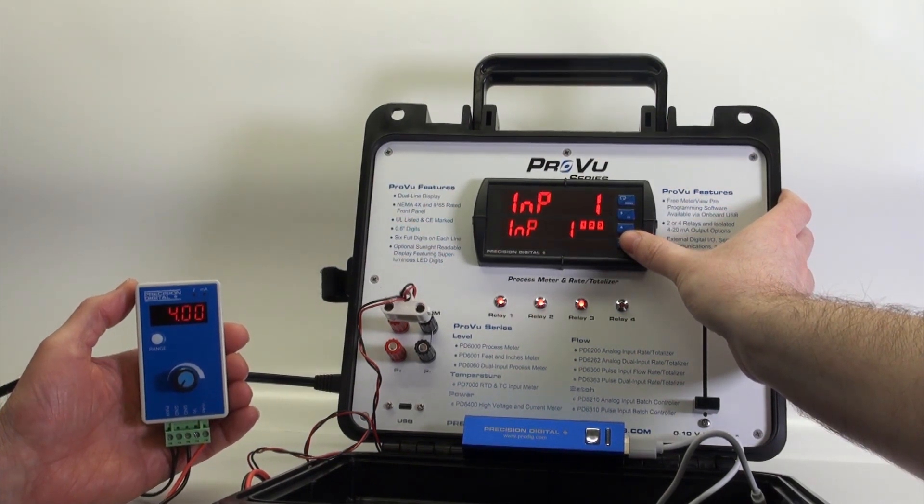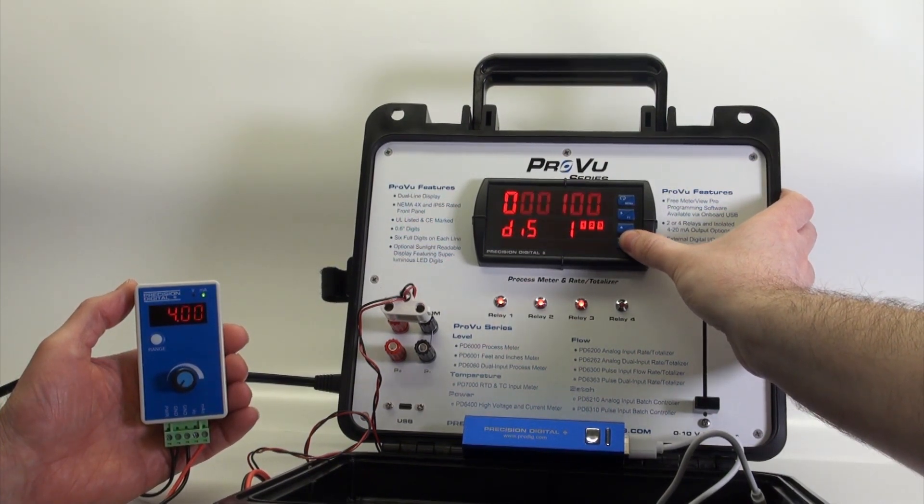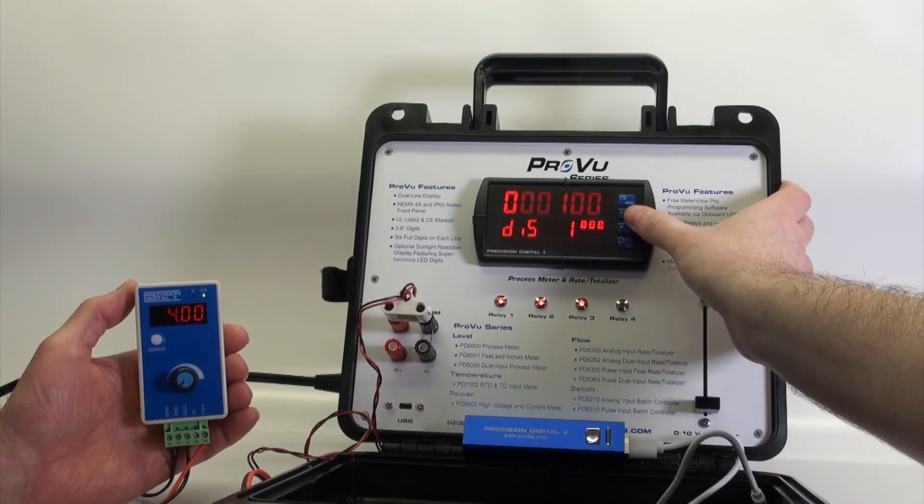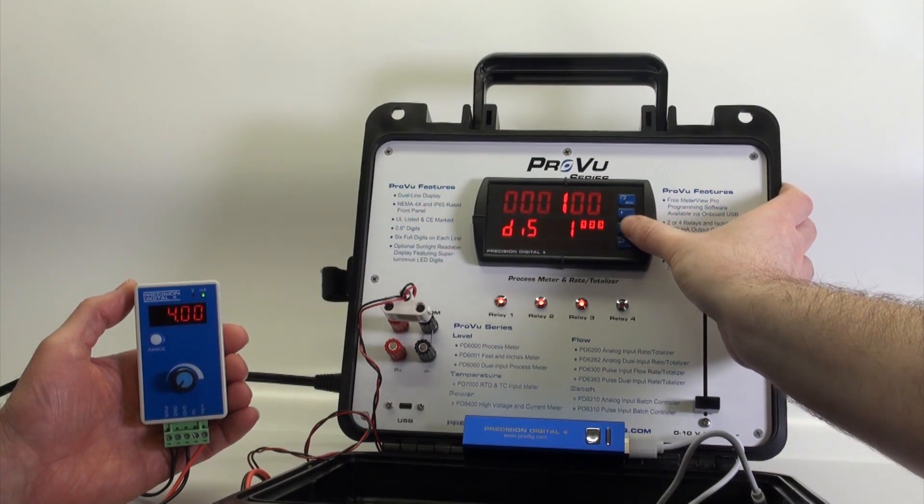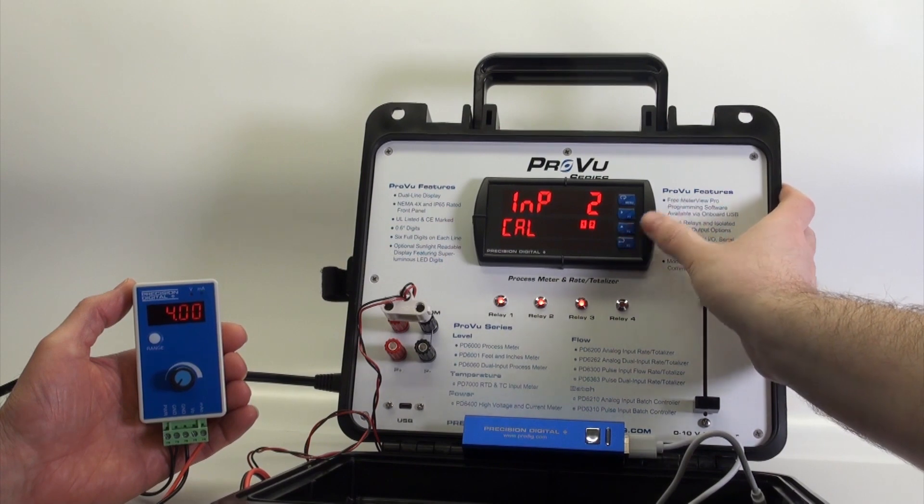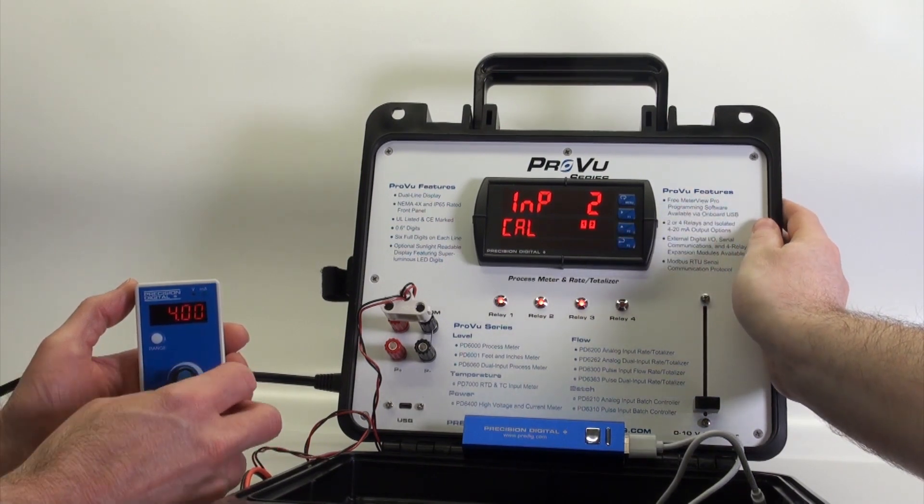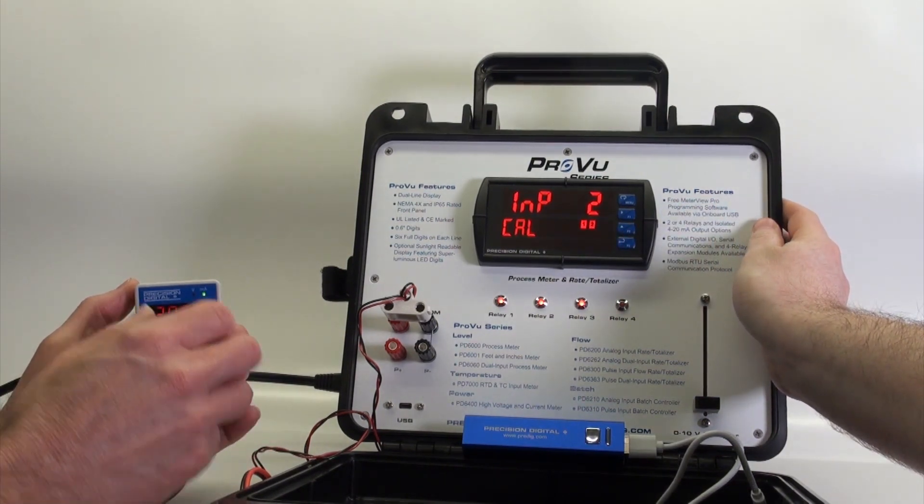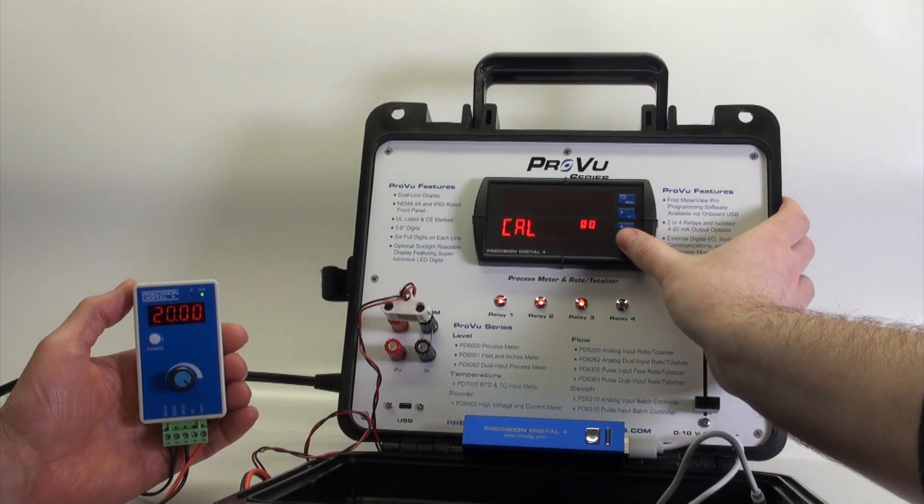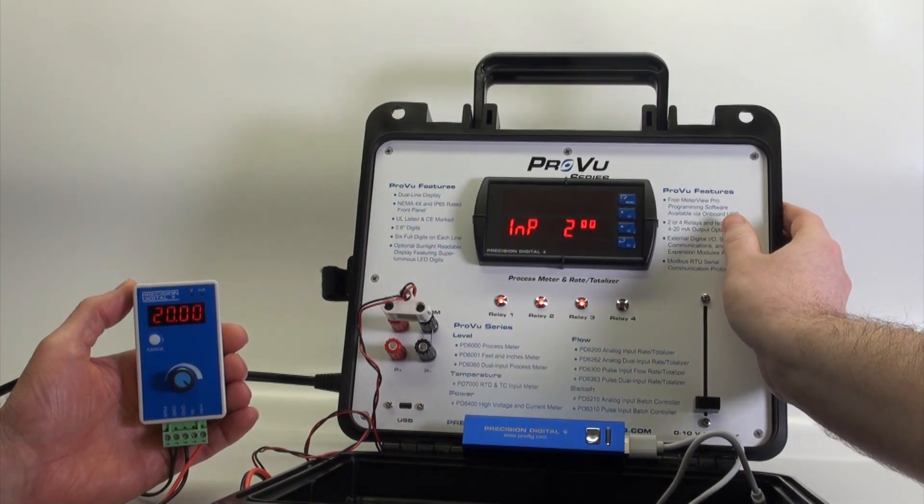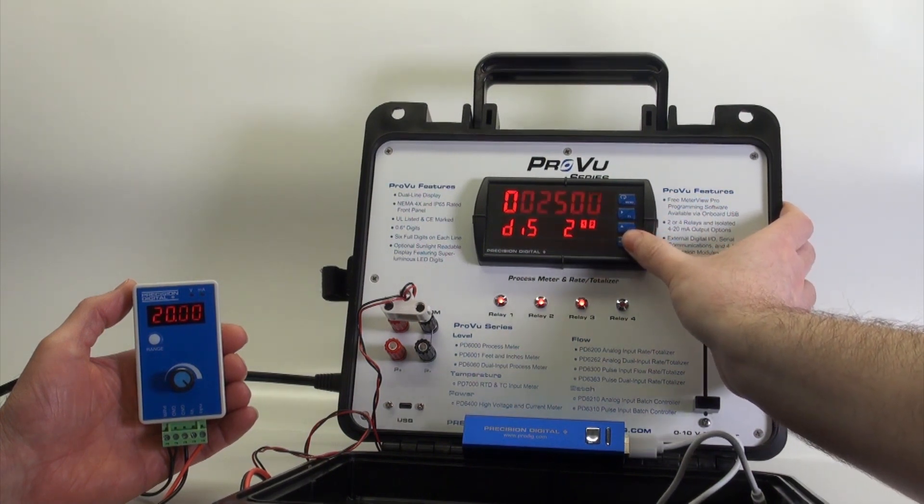We'll adjust the display to read 200, and now it's asking us for input two. All I have to do is slide the pot all the way to the other side, and we're putting out 20 milliamps, and the meter is asking us for 20 milliamps. It read that input.